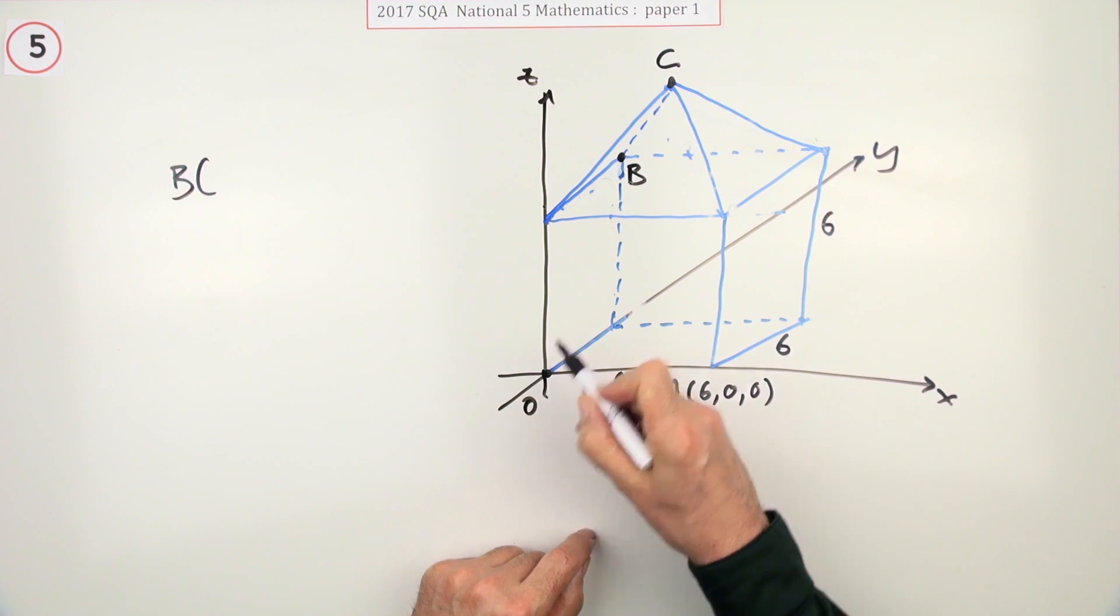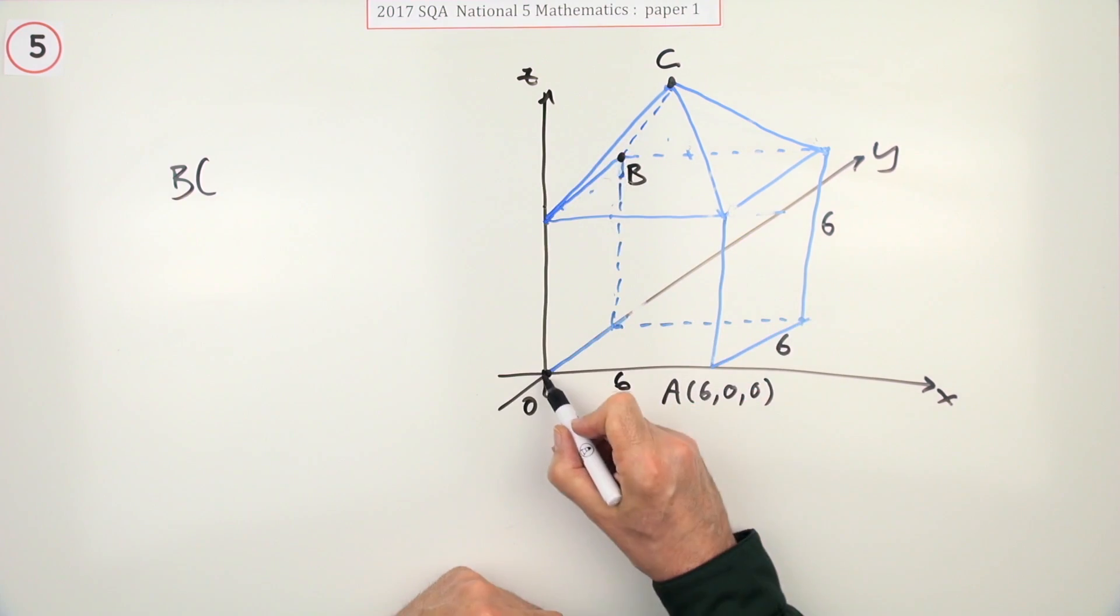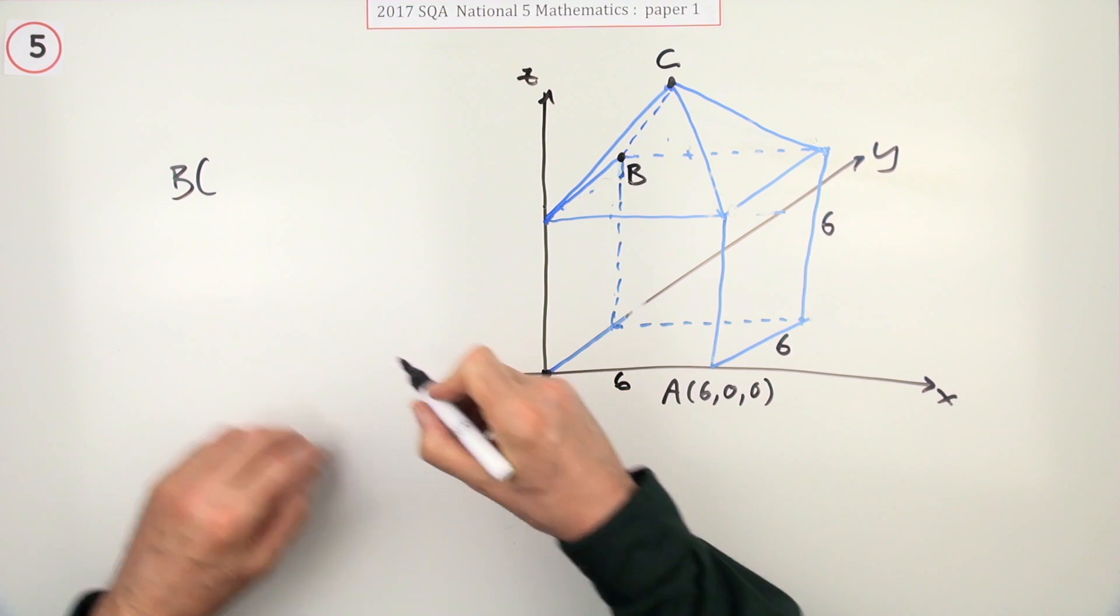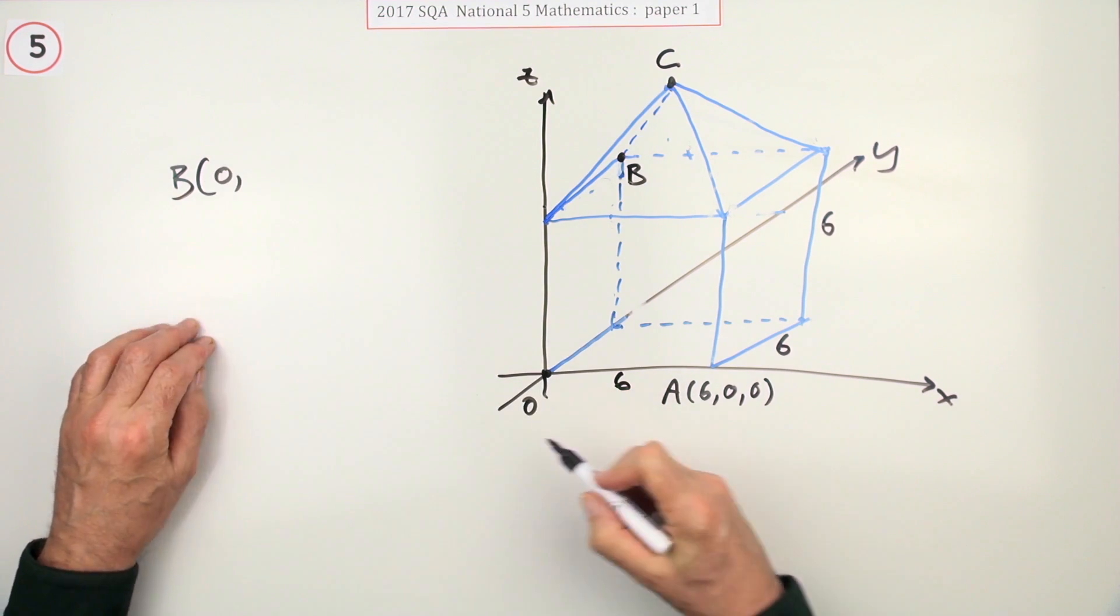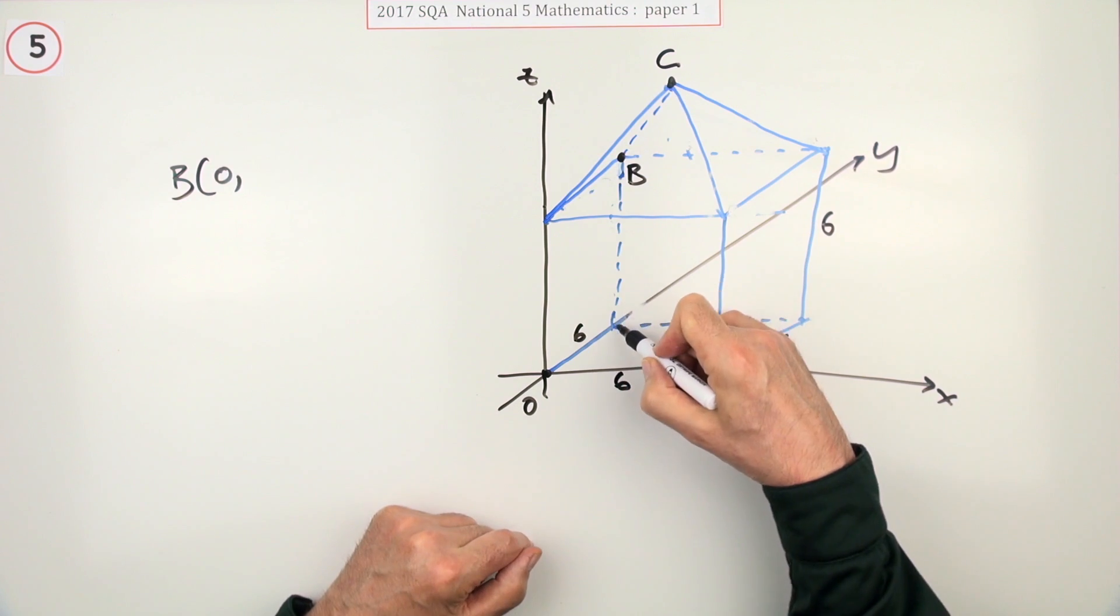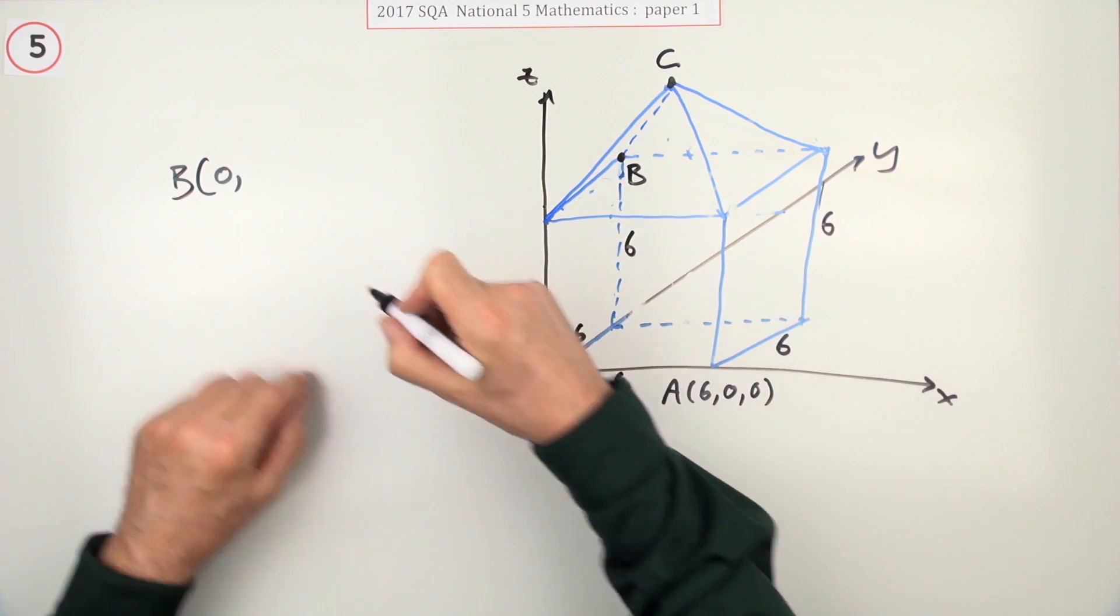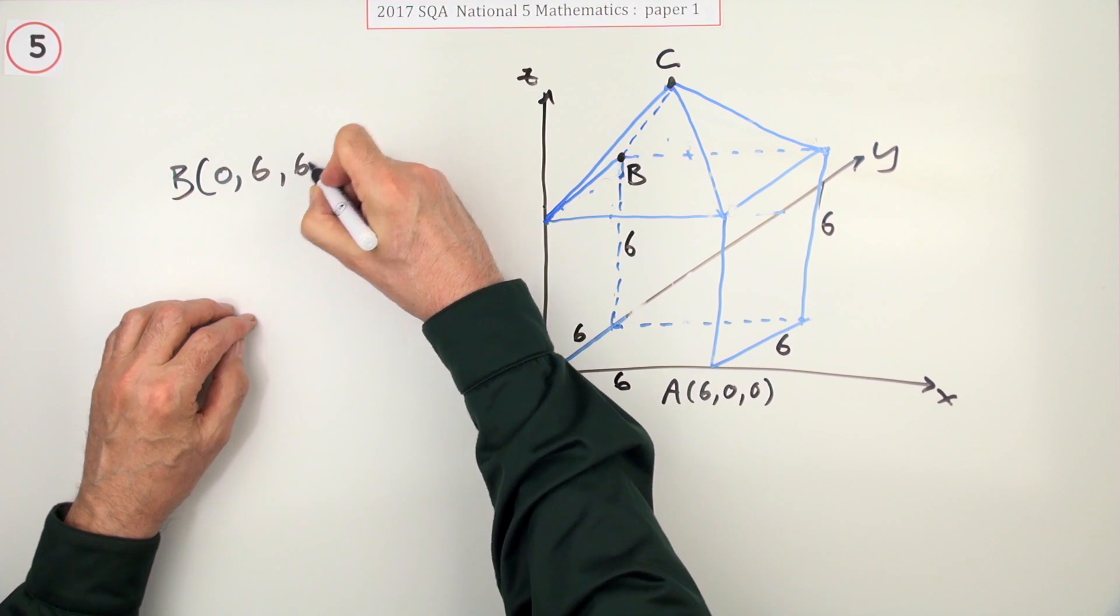So to start at the origin and go to B, it's on that end face, you don't go along at all, so that would be a 0. You go back along the 6 because you're going all the way back, and then you go up all the way to the top of the cube, which is another 6. So it's 0, 6, 6.